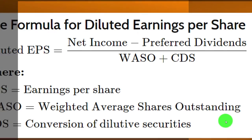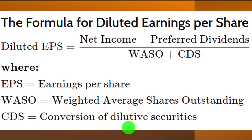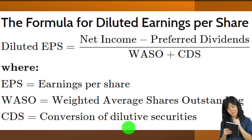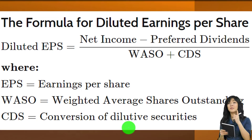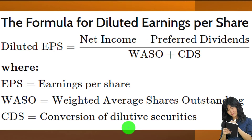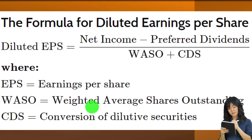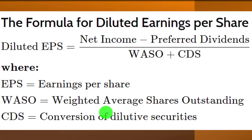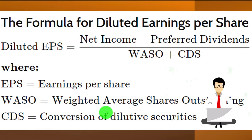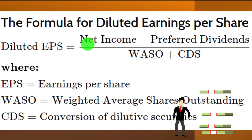The formula for diluted earnings per share: diluted EPS equals net income — the bottom line of the income statement — minus preferred dividends, because preferred dividends are an equity interest paid before common stockholders. That result is divided by the WASO plus CDS. The WASO is the weighted average shares outstanding. Net income represents earnings over a full year, so you need the shares figure to cover the same time frame.